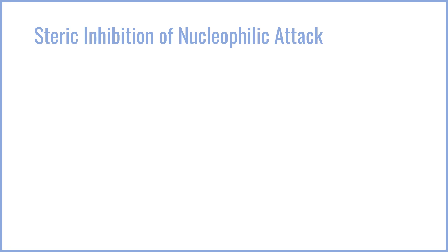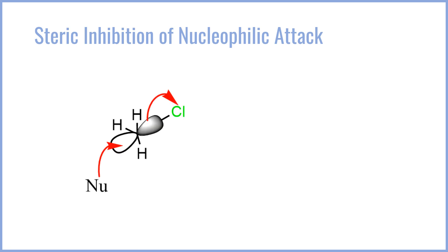Of the two factors we talked about, the first one we're going to address is the nucleophile actually getting to the antibonding orbital. Consider a methyl species where you have a CH3 group attached to a leaving group such as chloride. In this case, the hydrogens are very small and do not much obstruct the path of the nucleophile towards the antibonding orbital. As a result, the nucleophile can very cleanly push its electron density into the antibonding orbital and break the carbon-leaving group bond, releasing the chlorine anion.